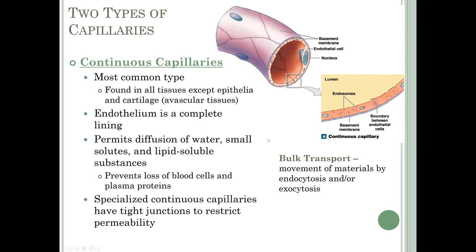There are some specialized continuous capillaries with tight junctions between cells to restrict permeability and what can diffuse across the border. An example of this is the blood-brain barrier that we discussed in A&P 1.